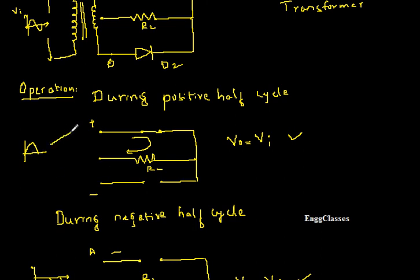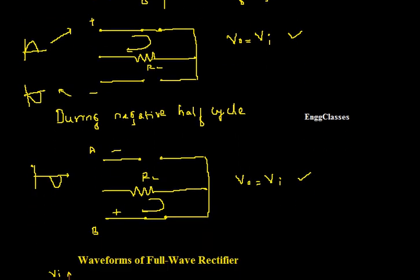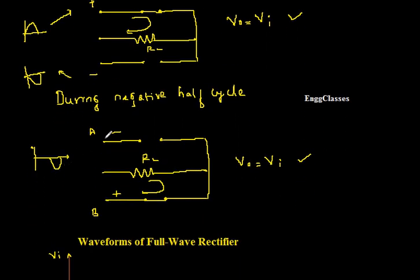The same positive half cycle would appear at point A and would appear with a reverse phase shift at point B. This makes diode d2 reverse biased. Similarly, during the negative half cycle, it appears negative at point A and appears positive at point B — again because of the transformer action, which introduces a phase shift of 180 degrees. That is how we get the output waveform with positive cycles only.